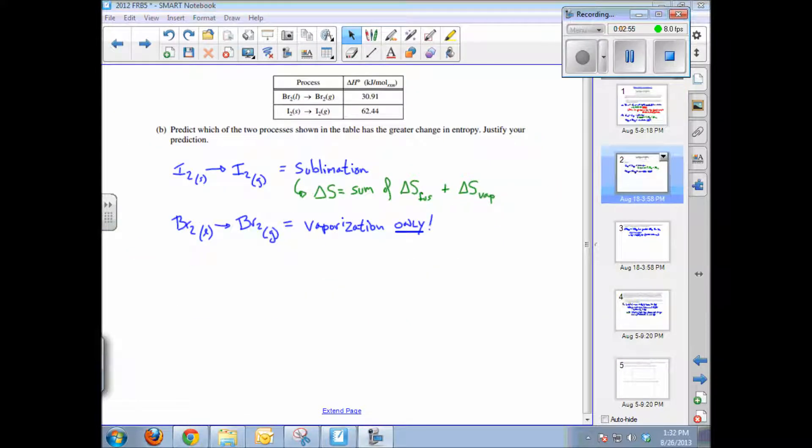Question B is very similar. Predict which of the two processes shown, the phase change from liquid to gas in the case for bromine, solid to gas in the case of iodine, which has a greater change in entropy. And I think this should be patently obvious that iodine goes from the solid phase, the phase of matter which has the lowest entropy, highly ordered phase of matter, to a gas phase, the most disorder or the highest entropy.